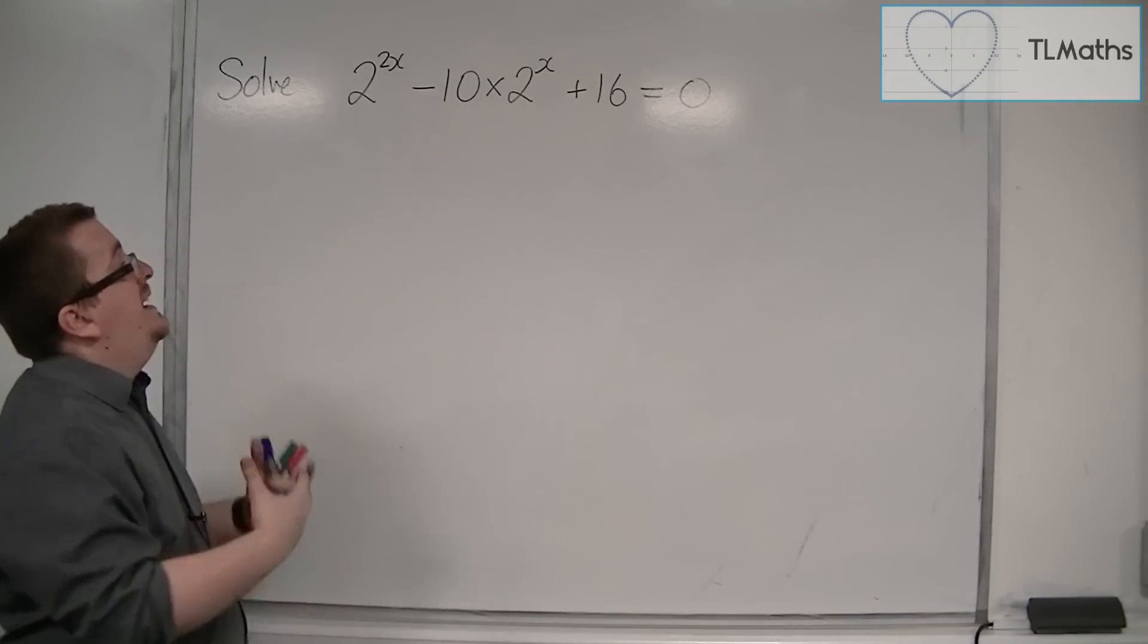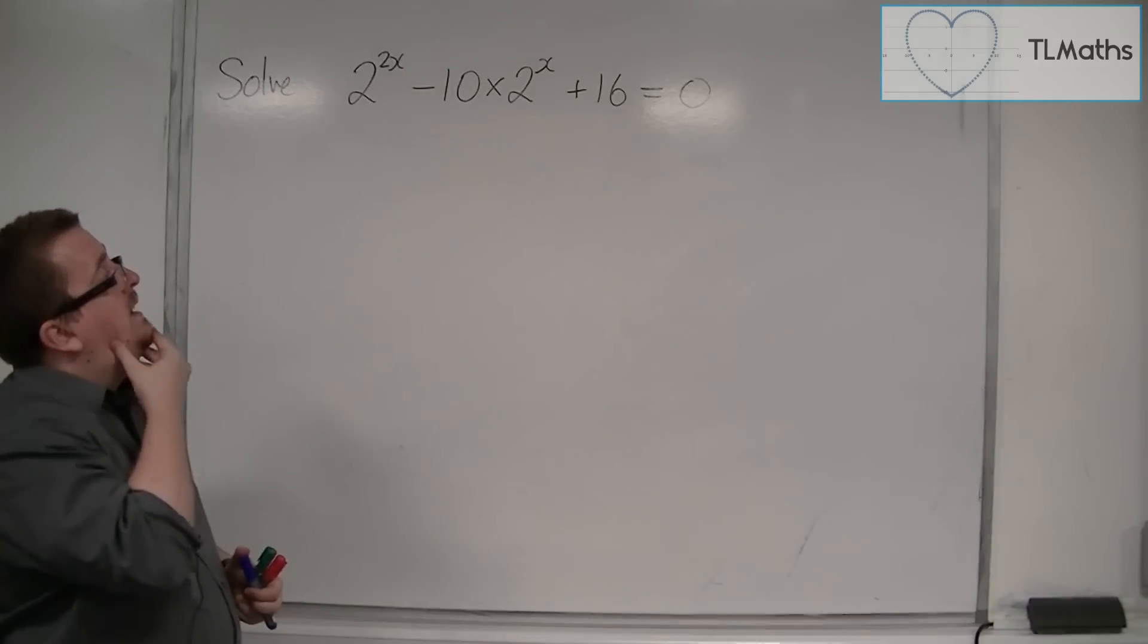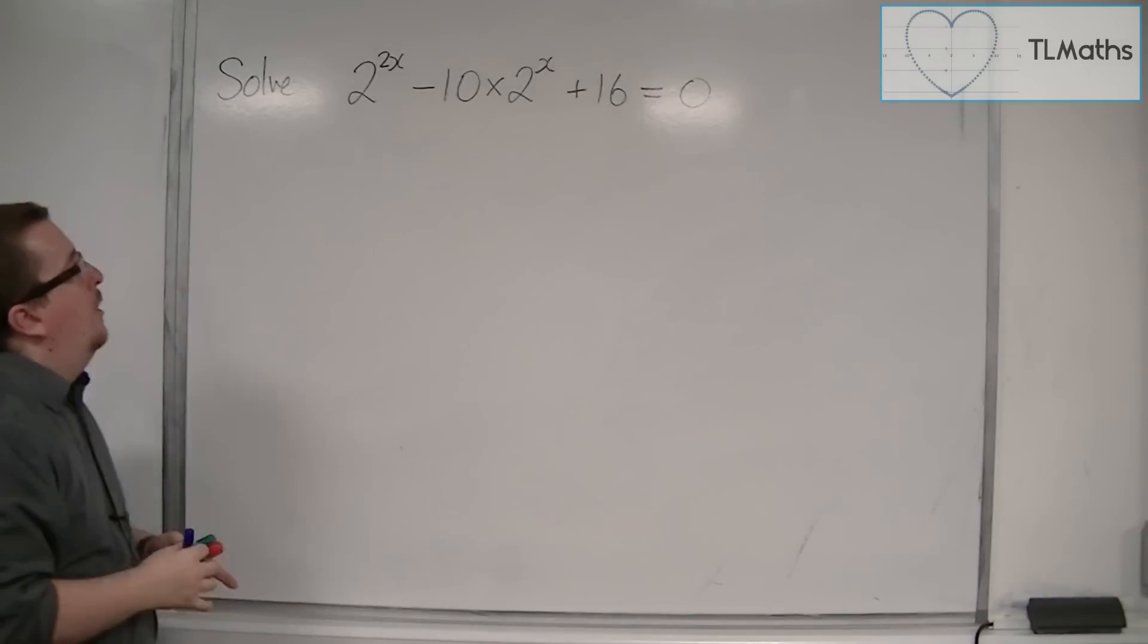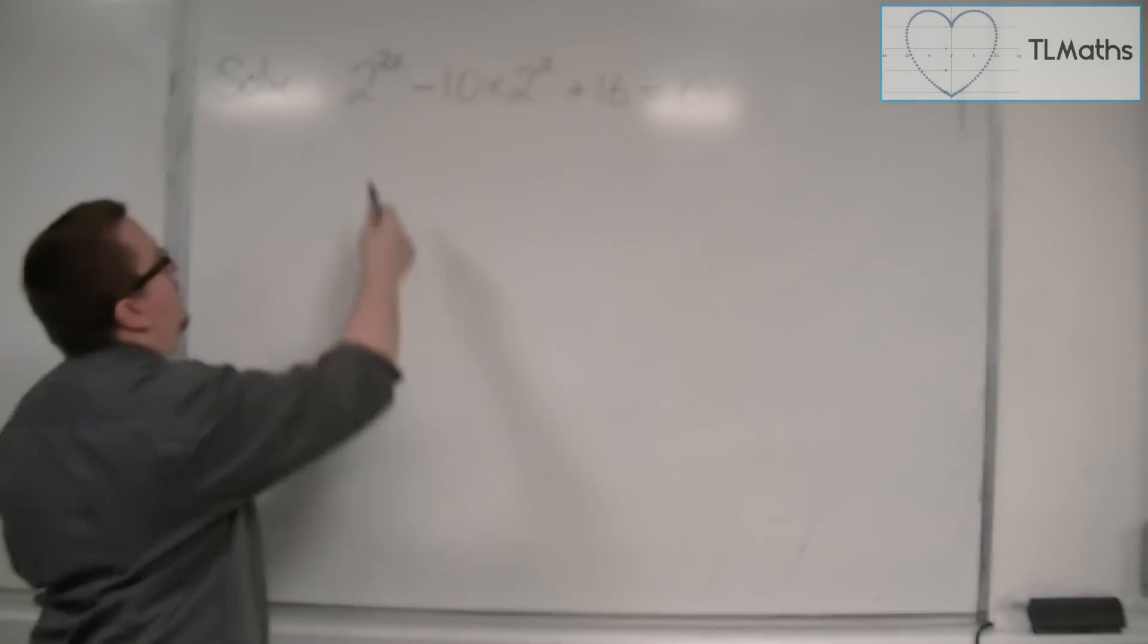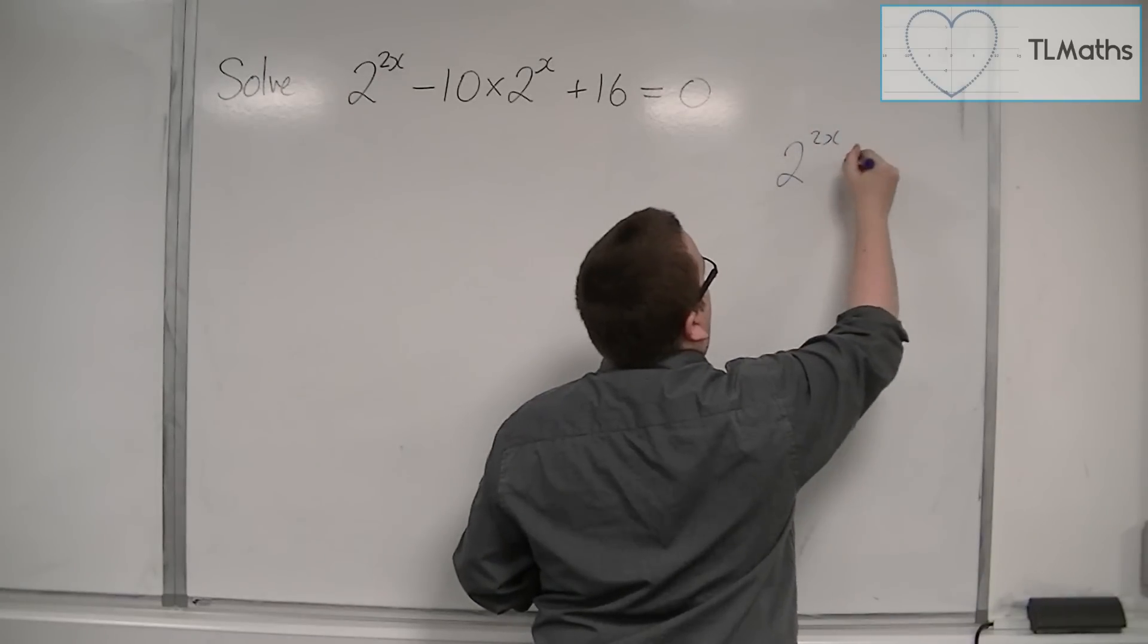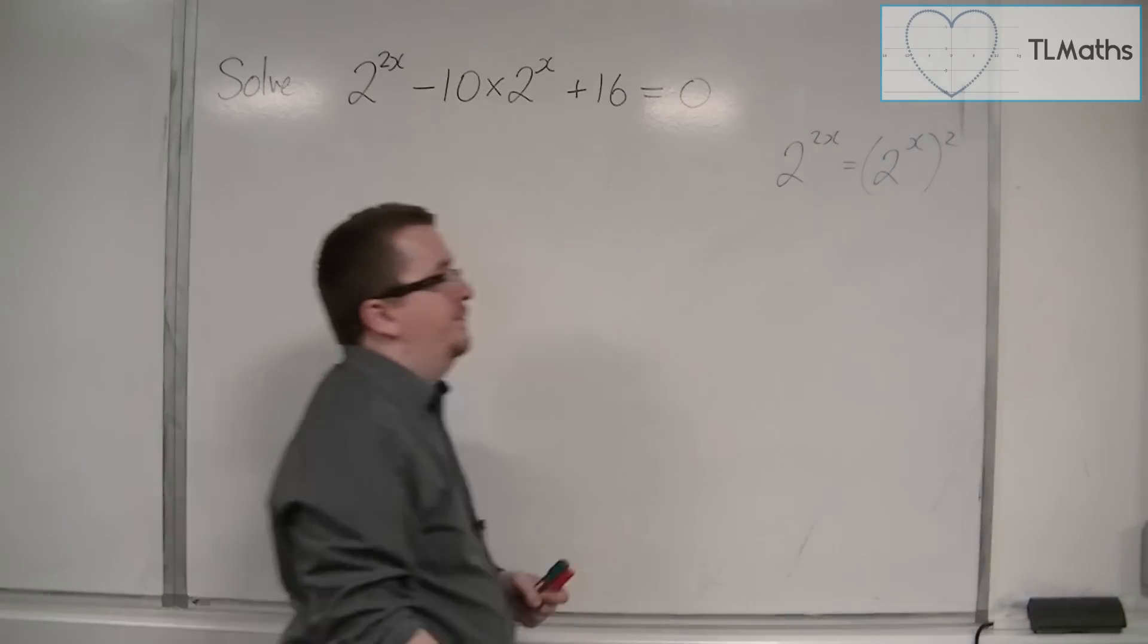And so, we need to be ready for it. In this type of problem, how it worked was you can look at 2^(2x) and say to yourself, well, 2^(2x) is just (2^x)².